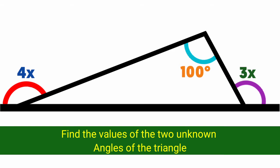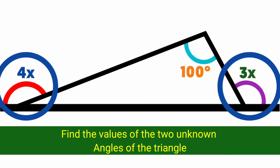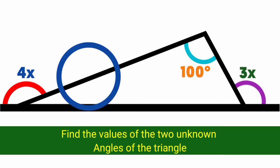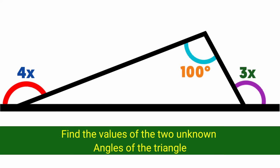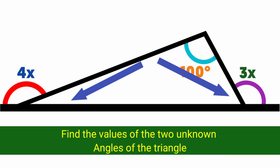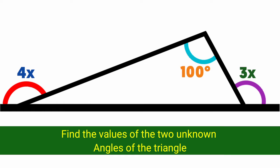If you look here, we are given two exterior angles and one interior angle. We are asked to find these two angles — angle P and angle Q. Consider this triangle.